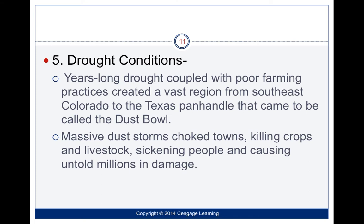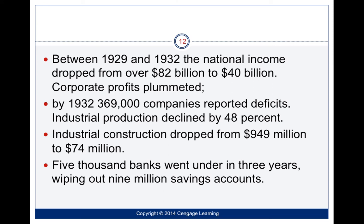We also had drought conditions. Droughts coupled with poor farming practices created what was called the Dust Bowl, from southeast Colorado to the Texas Panhandle. Dust storms would choke towns, kill crops, and sicken people. National income dropped from $82 billion to $40 billion. Profits plummeted, companies reported deficits, production declined, and construction dropped from $940 million to $74 million. 5,000 banks went under, wiping out 9 million savings accounts.